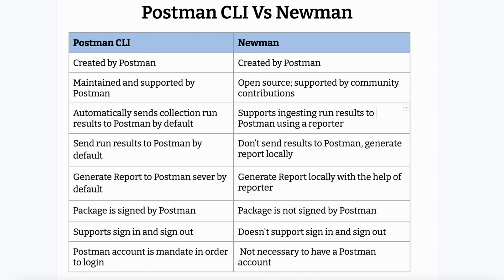The next point: Postman CLI automatically sends collection run results to Postman by default. This means when you execute with the Postman CLI command, the test results are automatically sent to the Postman server — so you can access them anytime on the Postman cloud. With Newman, run results are ingested to Postman only using a reporter, meaning results are saved locally on your system with the help of a reporter.